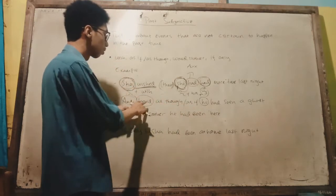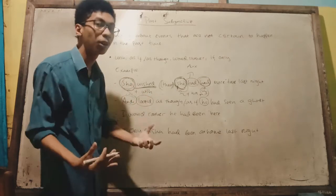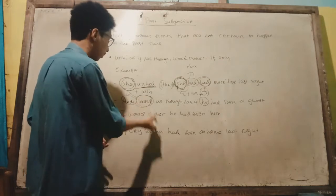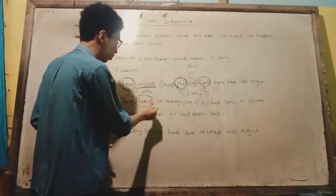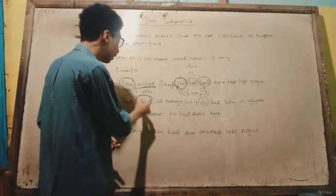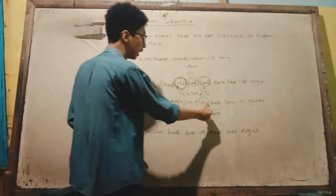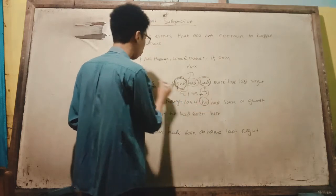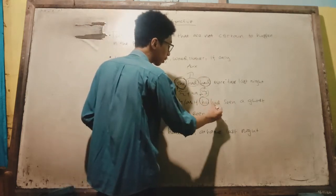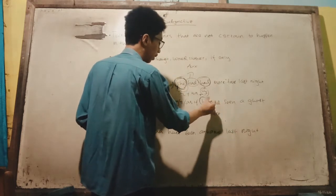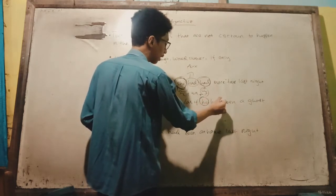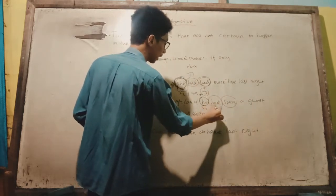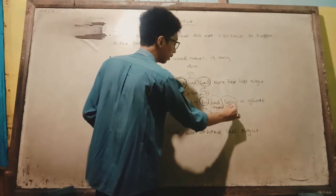Because we are talking about the past, we need to change the verb into verb two — it becomes 'looked.' So: 'Andy looked as though/as if he had.' Same as with 'wish,' we also use past perfect here: 'He had seen a ghost.' The second subject is followed by 'had' and then verb three.